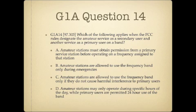Question 14. Which of the following applies when the FCC rules designate the amateur service as a secondary user and another service as a primary user on a band? A. Amateur stations must obtain permission from a primary service station before operating on a frequency assigned to that station. B. Amateur stations are allowed to use the frequency band only during emergencies. C. Amateur stations are allowed to use the frequency band only if they do not cause harmful interference to primary users. Or D. Amateur stations may only operate during specific hours of the day while primary users are permitted 24-hour use of the band.